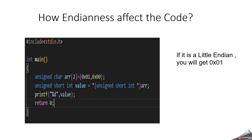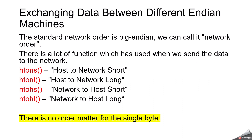How does endianness affect your code? When you perform a bitwise operation on an integer, the compiler automatically handles endianness, so you don't need to worry about it. However, endianness mainly affects results when you perform typecasting. For example, if you create a character array with two elements and typecast it to a short integer, the result depends on endianness. On a little-endian machine you might get 0x0001, while a big-endian machine will give a different result. You must carefully handle endianness during typecasting.